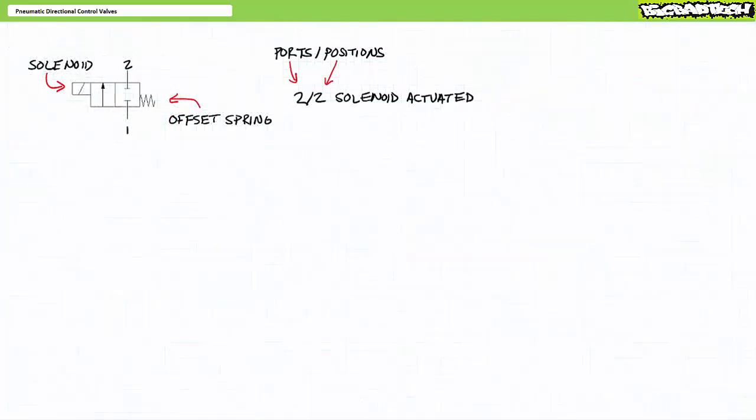Consider this two-by-two, or two-port, two-position, solenoid-actuated, spring-offset directional control valve. Ports are the entry and exit points to a valve. Since this schematic symbol has two paths leading to or from it, this directional control valve has two ports. We'll return to port labeling conventions unique to pneumatics in a moment, but for now let's just call them one and two. In the position on the right, passage from one to two is closed, as indicated by the block T's. The spring on the right-hand side ensures the directional control valve is offset into this closed position in the deactivated state.